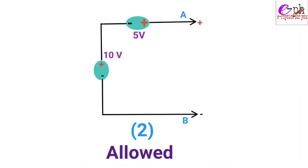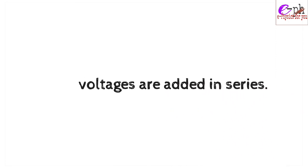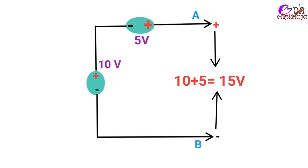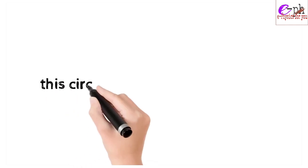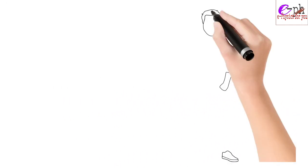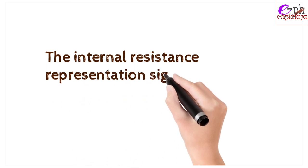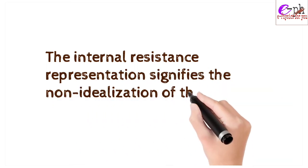The second circuit will be allowed because a 10-volt and a 5-volt battery are connected in series. Voltages add in series, so it will provide 10 plus 5, that is 15 volts, across the AB terminals. So this circuit will be beneficial to us.